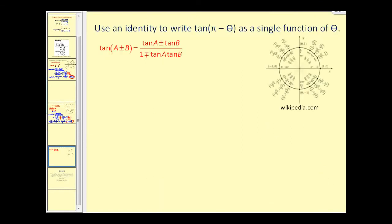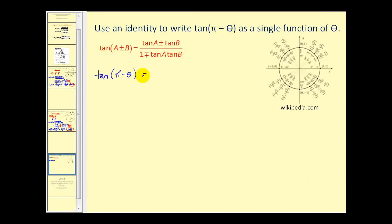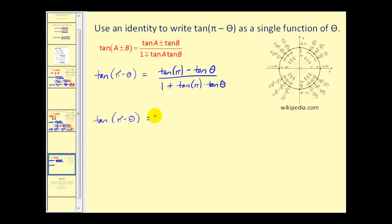The last problem: use an identity to write tangent of pi minus theta as a single function of theta. Applying the difference identity, the numerator is tangent pi minus tangent theta and the denominator is 1 plus tangent pi times tangent theta. Since tangent pi equals 0, we get 0 minus tangent theta over 1 plus 0, which equals negative tangent theta.